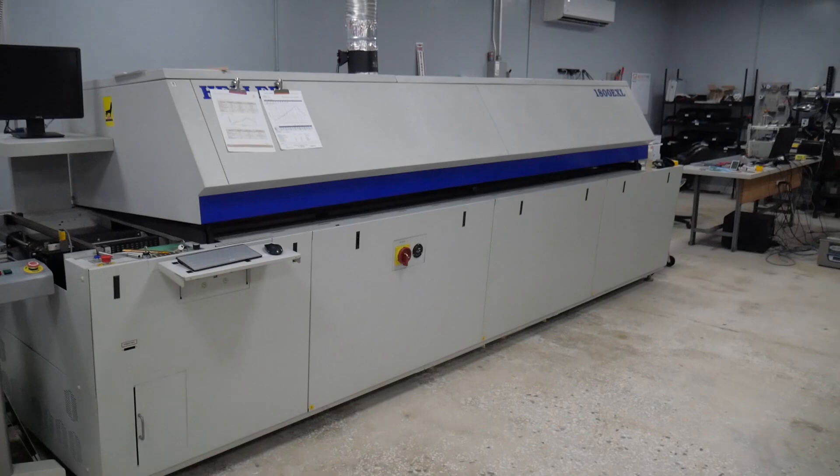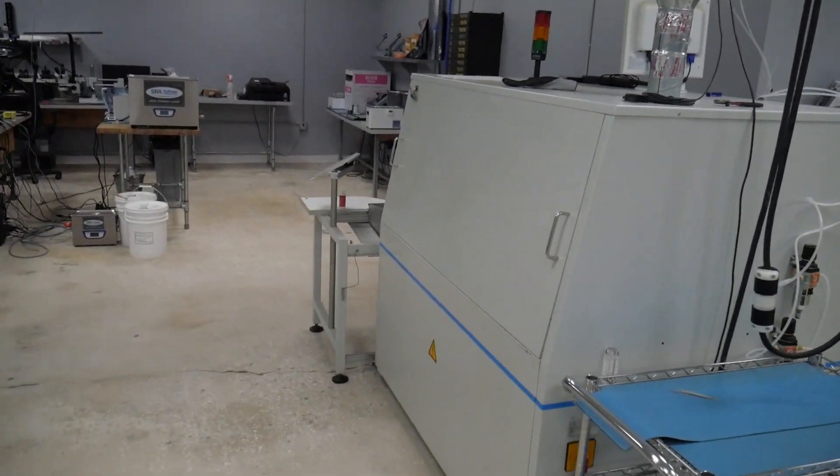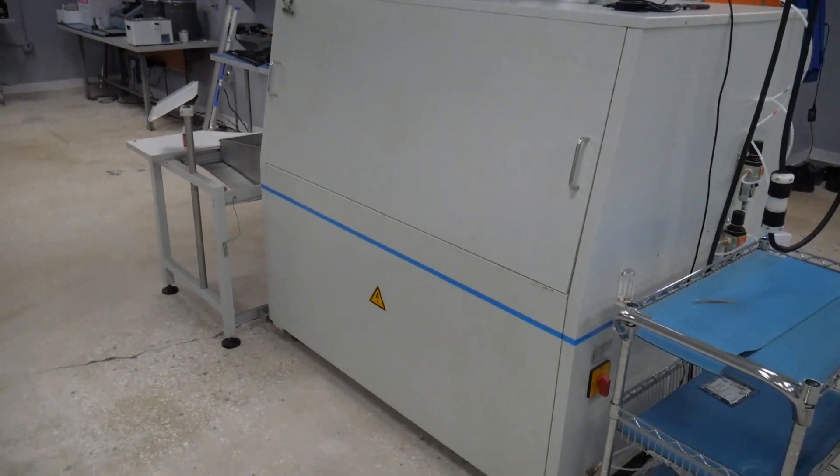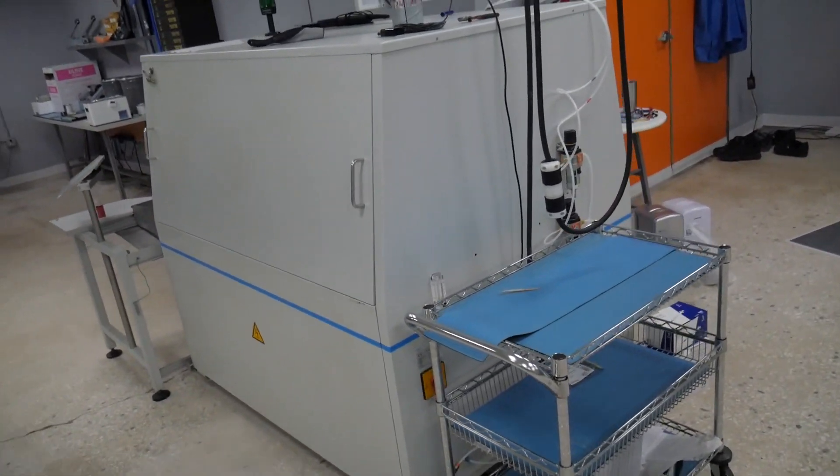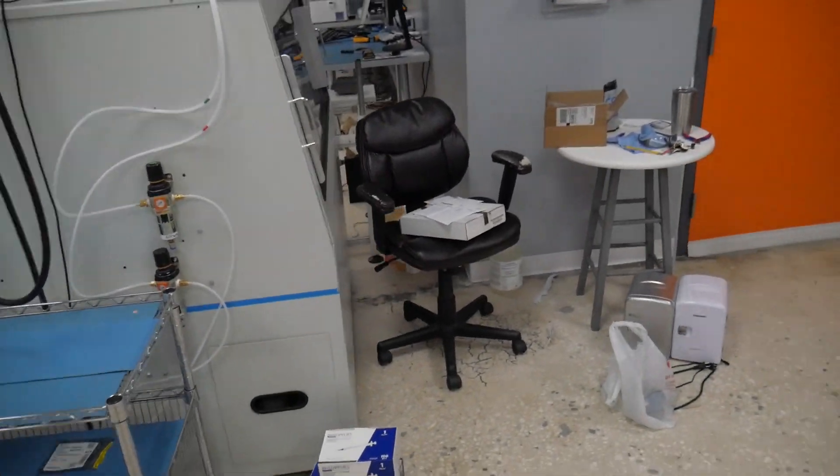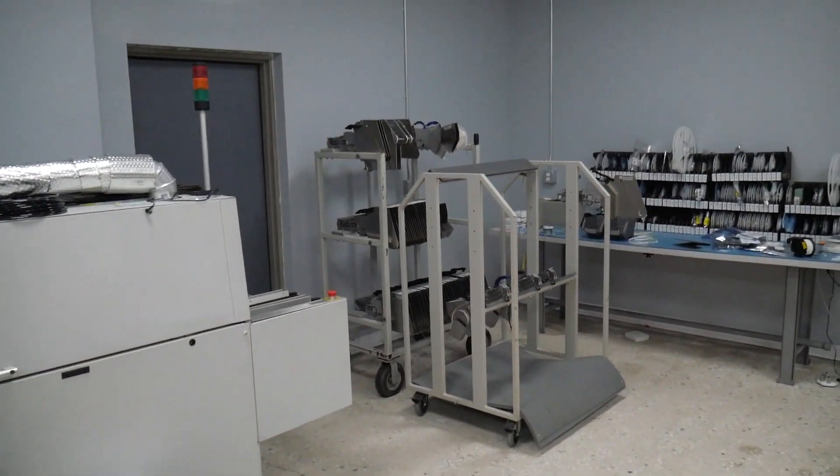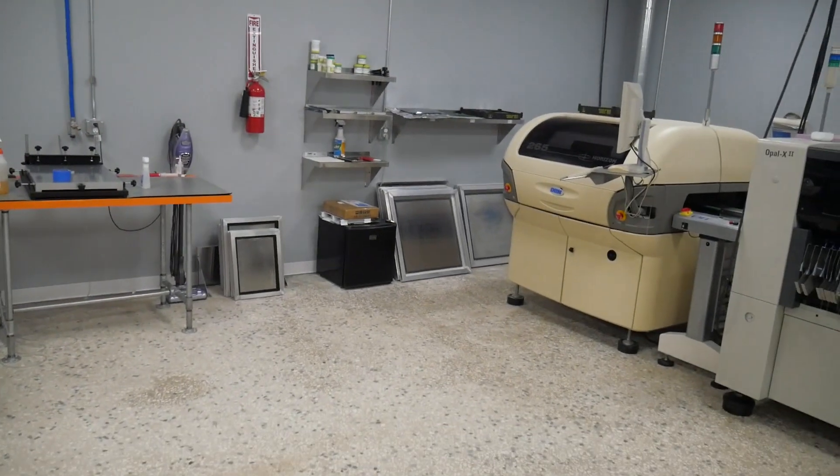So about a year ago we got an eight zone oven with two cooling zones, built out this space, and now it's like 2500-3000 square feet. And then also got a through-hole selective soldering machine so that allowed us to do through holes without having to do them all by hand, which obviously is not very pleasant. And then with that we got obviously more feeders, more space over here.